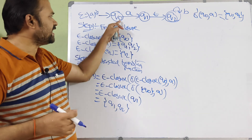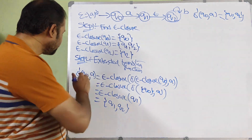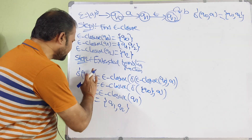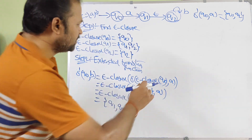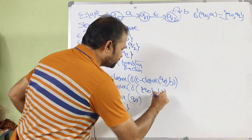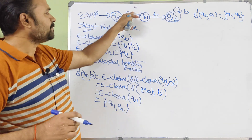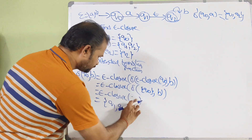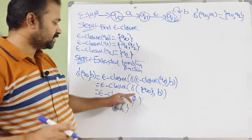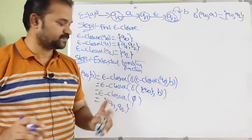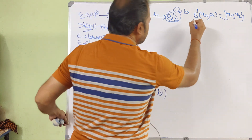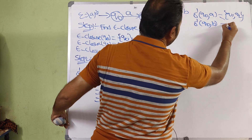Next, we calculate δ̄(Q0, B). Applying the formula with input B: δ(Q0, B) has no transition, so it equals ∅ (phi). Therefore ε-closure(∅) is ∅ only. So δ̄(Q0, B) = ∅.